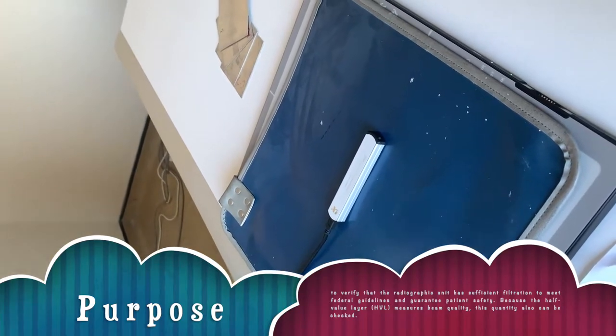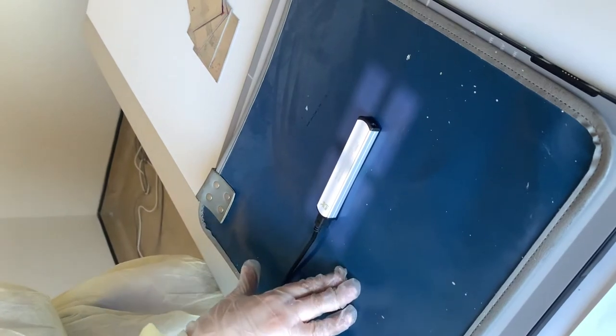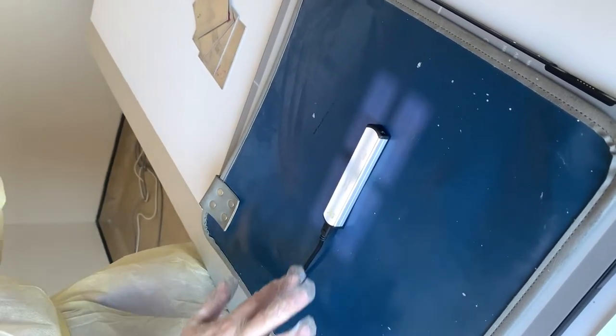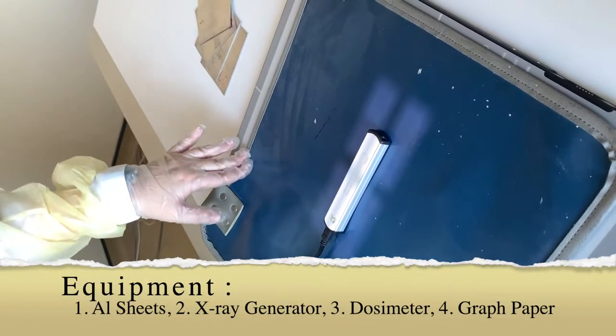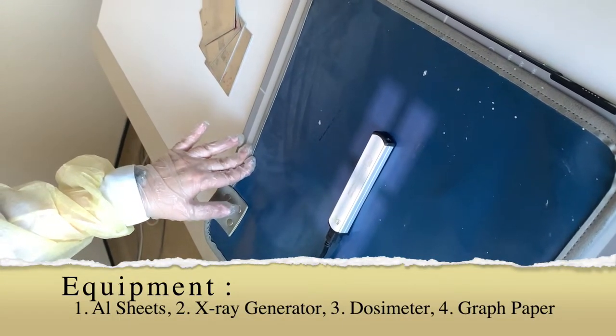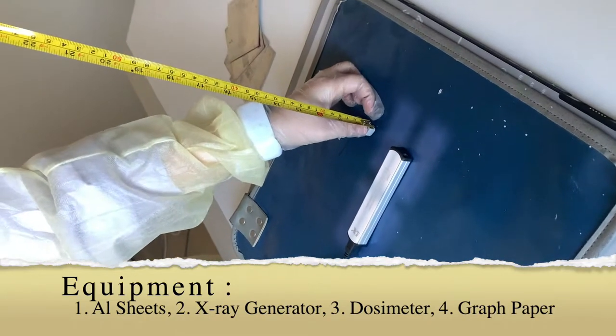For the setup of the machine, we set up the dosimeter in the middle of the IR, collimate slightly larger than the dosimeter. We place the lead sheet under the dosimeter to prevent backscatter, and then we measure the distance at 40 inches.